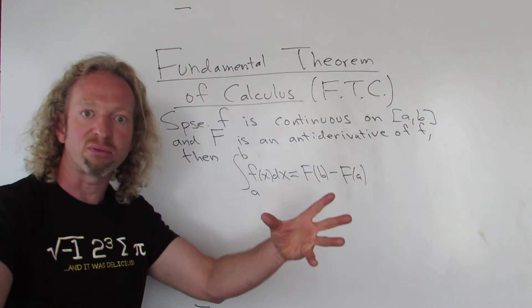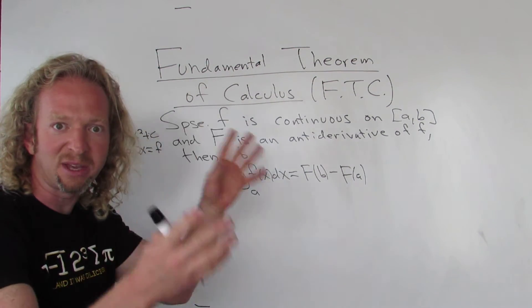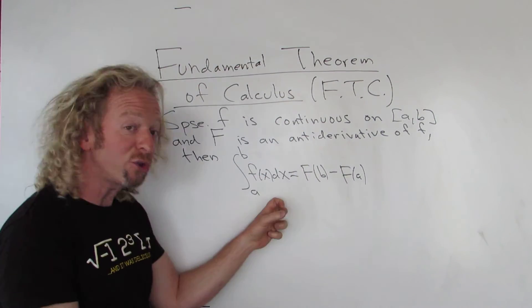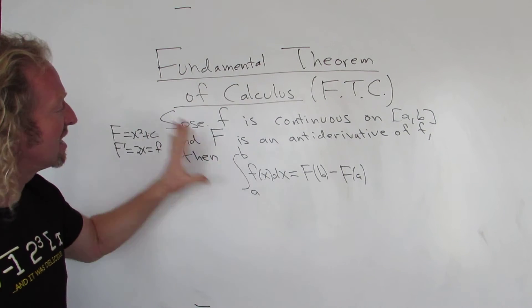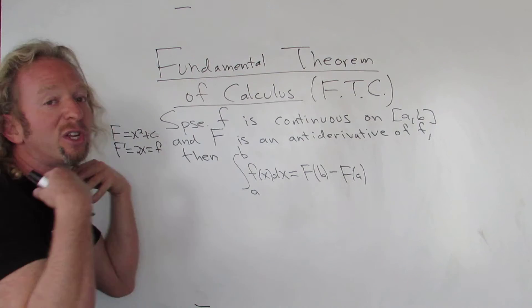So this formula lets us avoid the long way of computing definite integrals. Remember, the long way is the limit process, the limit definition. We have delta x and c sub i. You take a limit of a sum and you have to use all those formulas. It's a huge, long problem. Those days are gone, right? So this is the easy way to do definite integrals. That's what this theorem is about, okay? That's what it's used for.